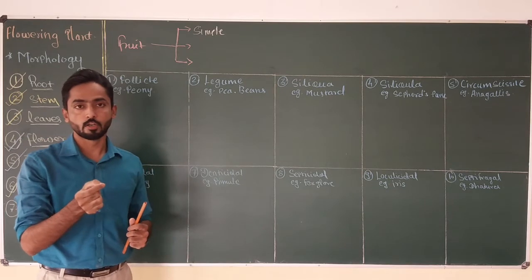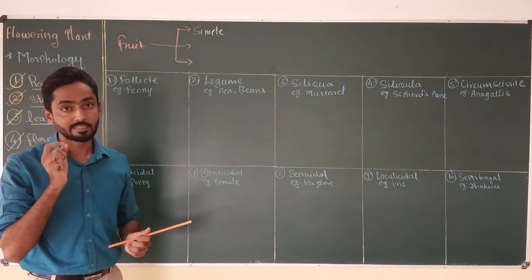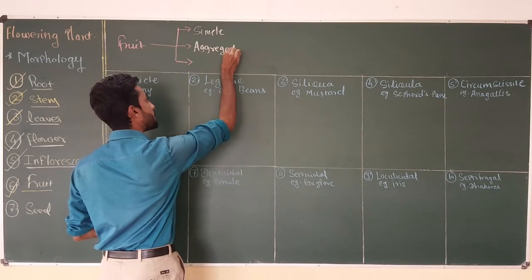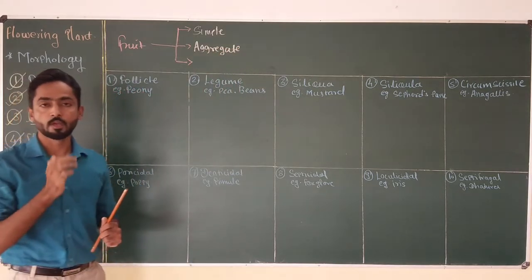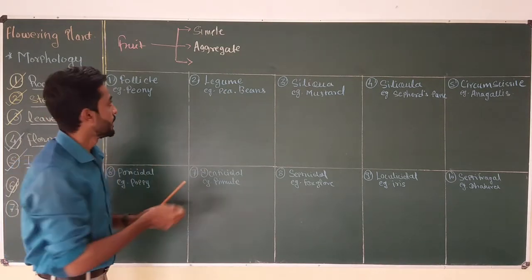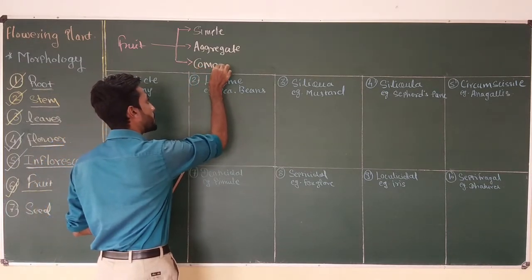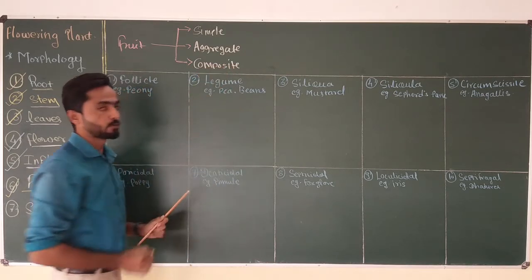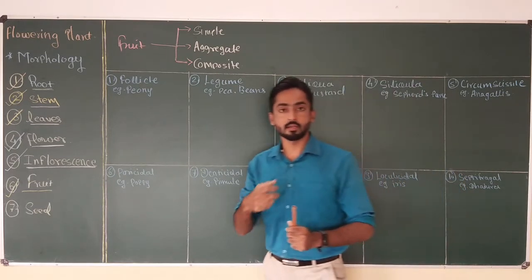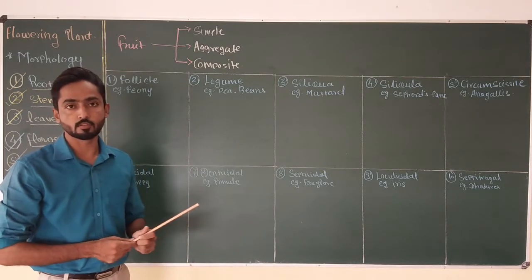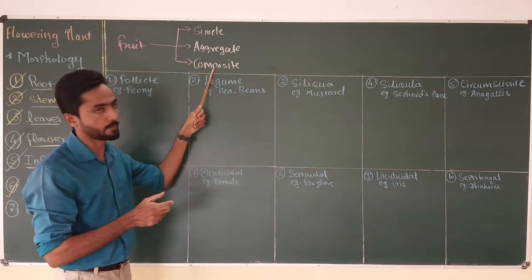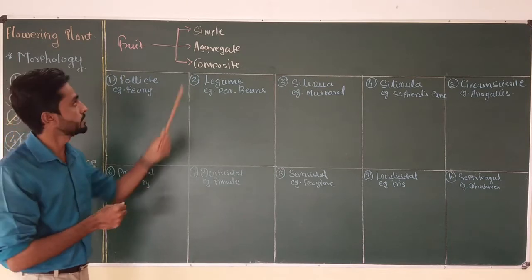The first type of fruit is simple fruit. Simple fruits are generally produced from a single flower which may contain mono or polycarpellary but syncarpous ovary. The second type is aggregate fruit, produced from mono or polycarpellary but apocarpous ovary — that means the carpels should be free from one another. The last type is composite fruit, produced from an entire inflorescence or entire group of flowers, and in the production process the peduncle may also take part.